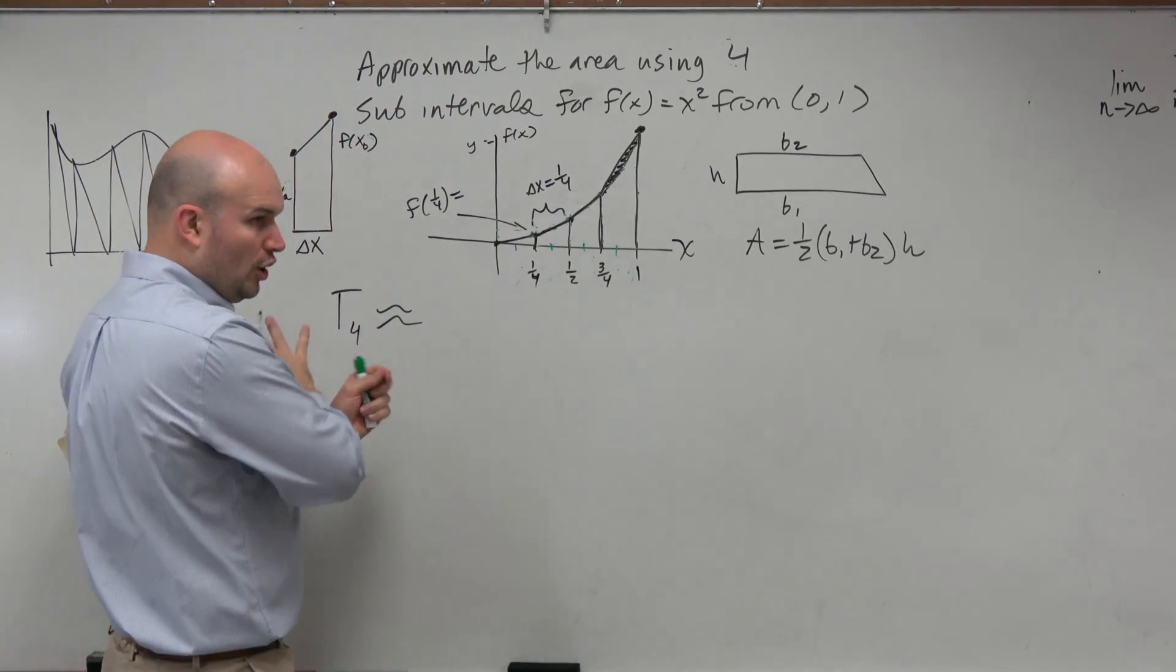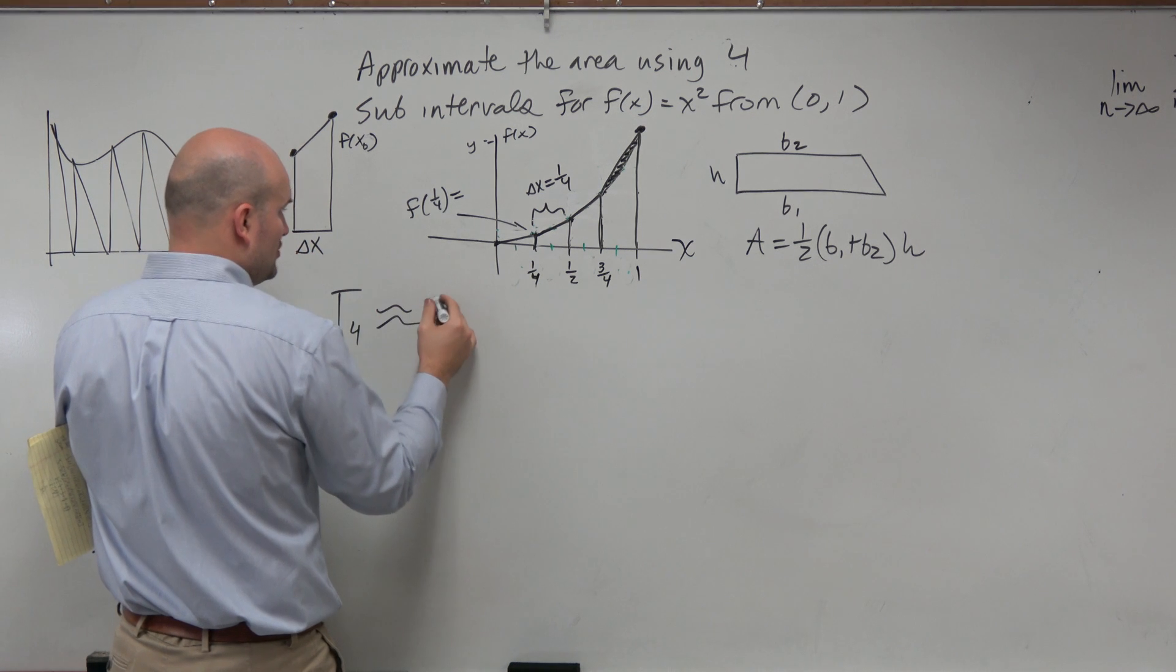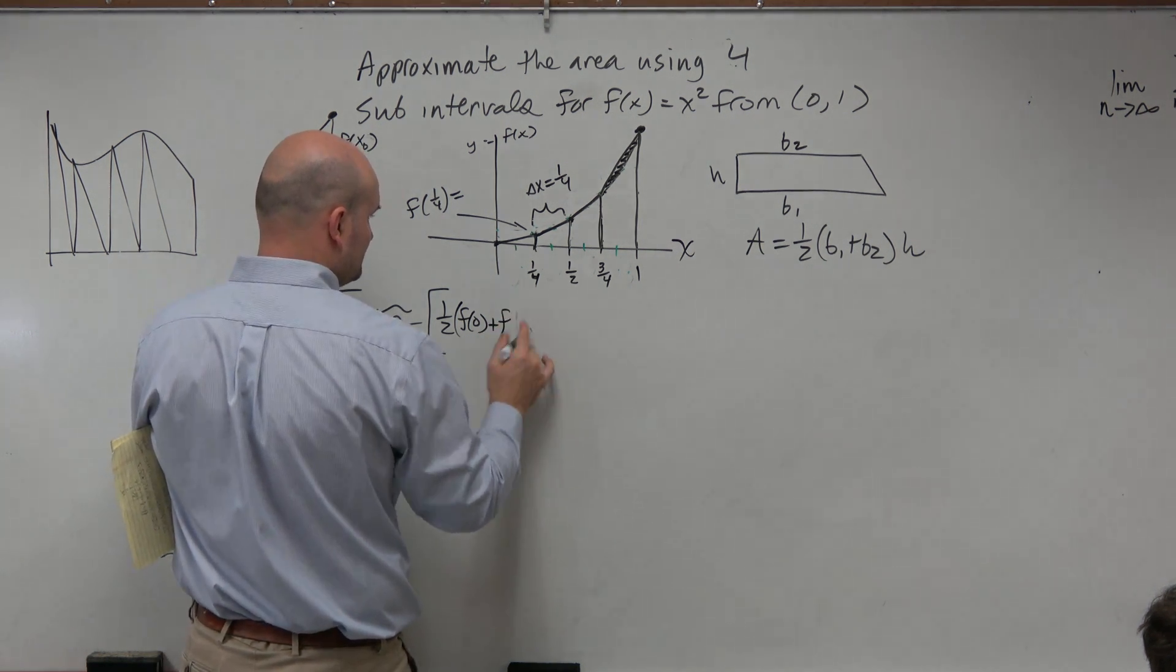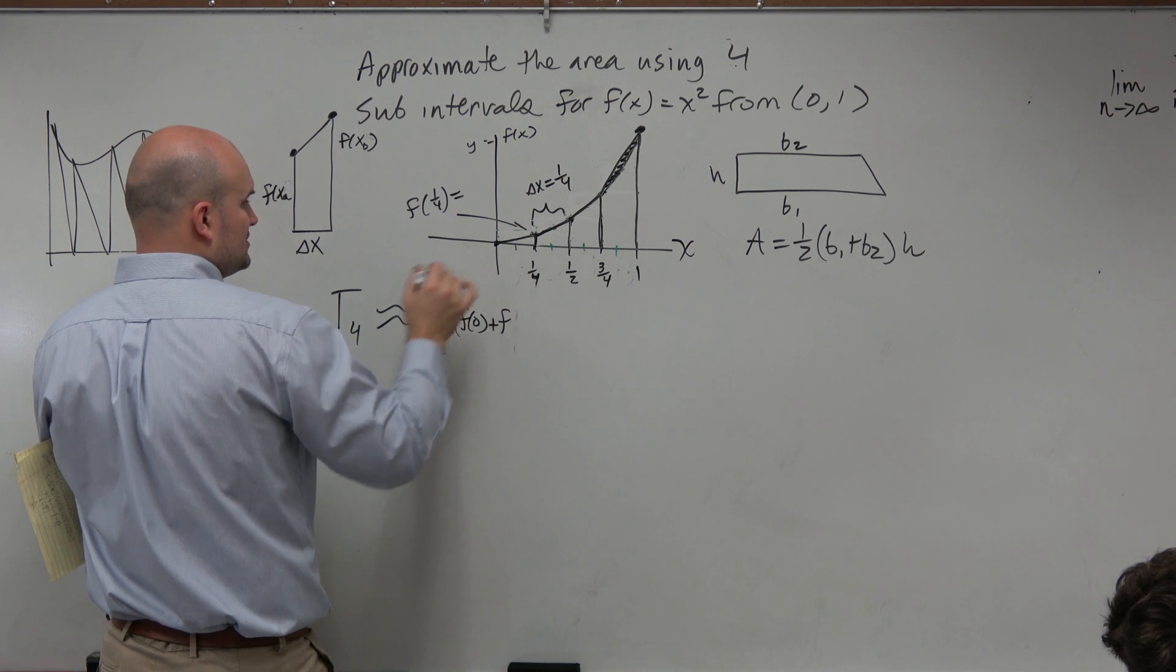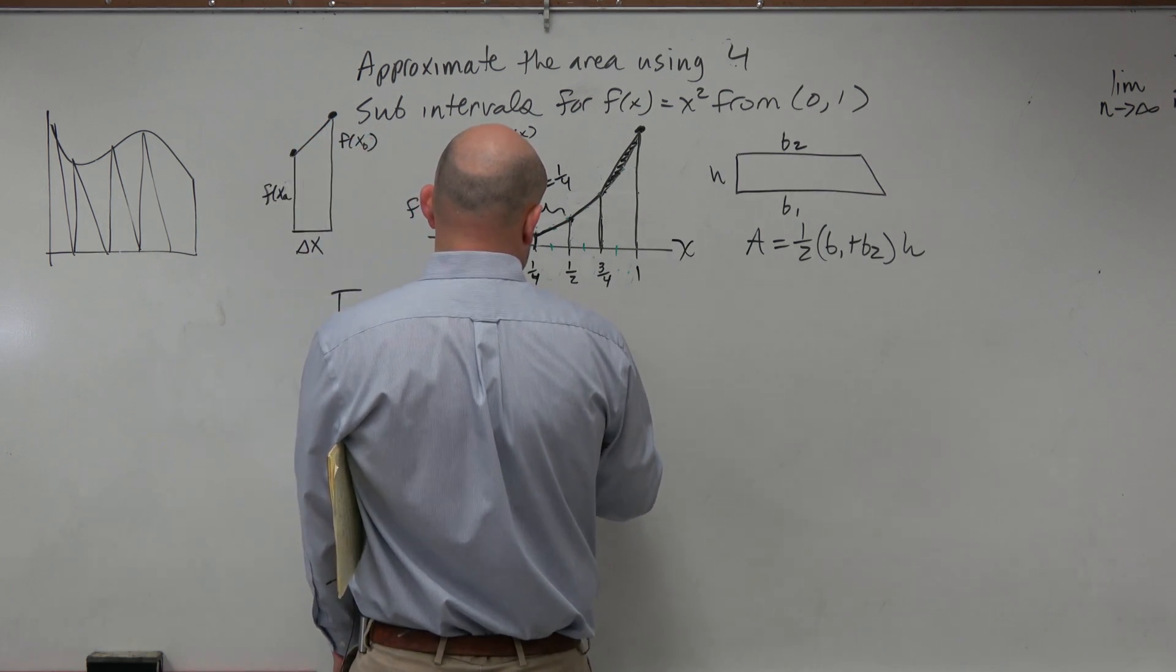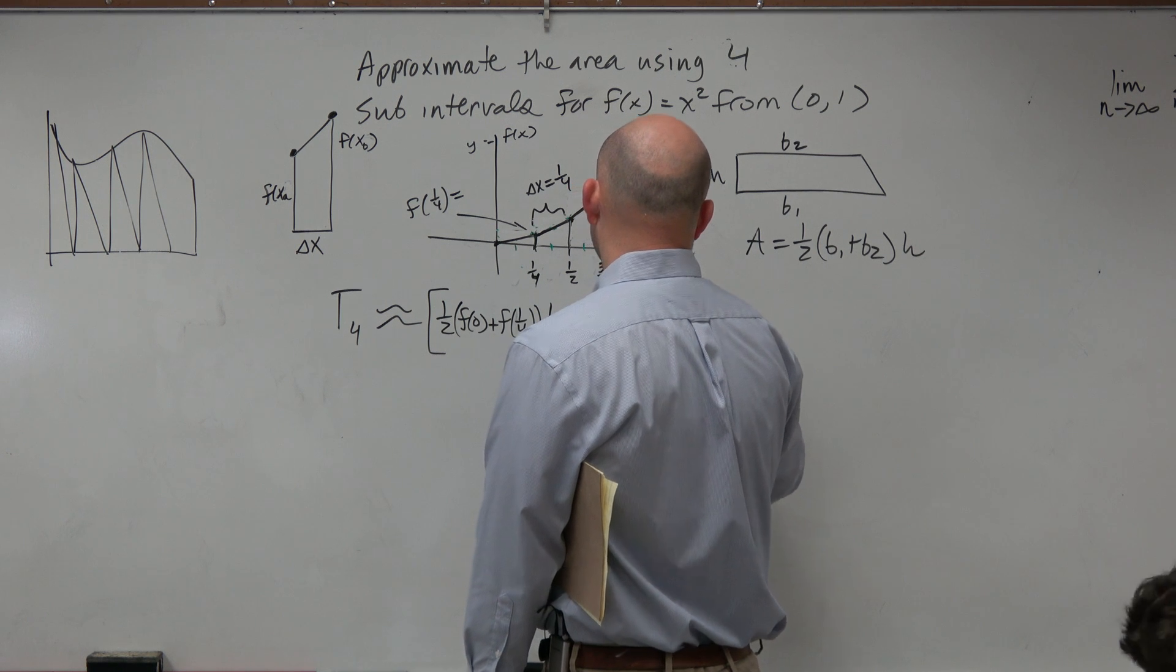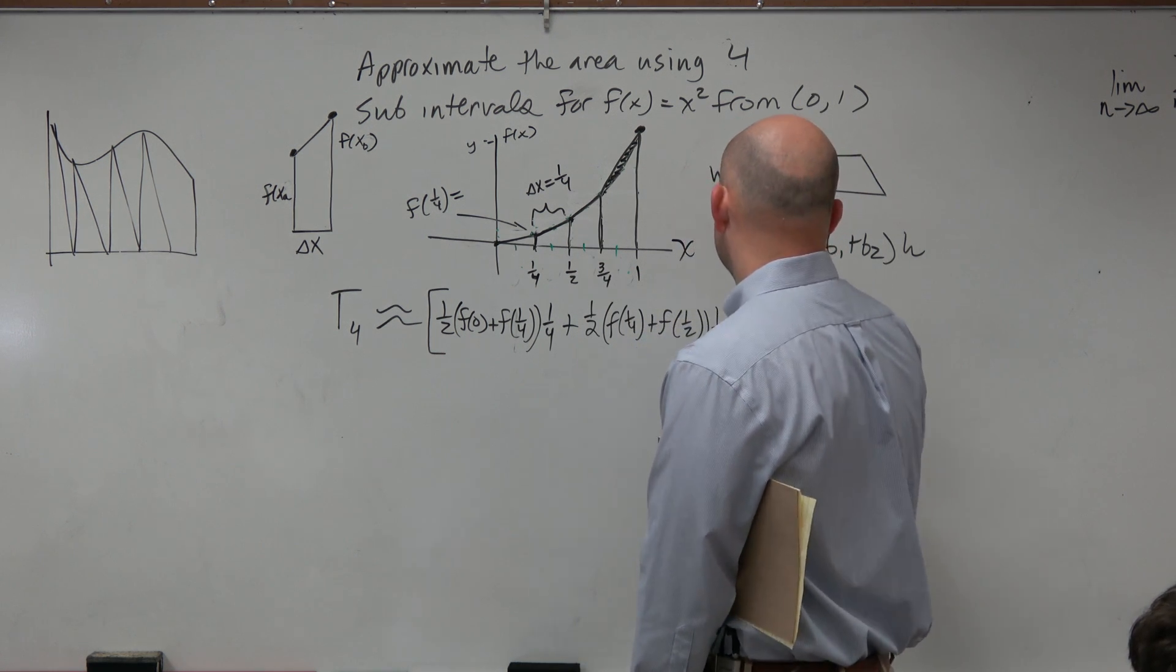So I'm going to write this out all the way because this is different than the left hand, right hand, and the midpoint formulas. So the approximation is going to be, let's figure out the area for each one of these. The area of this one is 1/2. Let's think about the base. That's going to be f of 0 plus f of 1/4 times 1/4. Plus, let's do this one, so that's going to be 1/2, f of 1/4 plus f of 1/2 times, again, this delta x is 1/4.